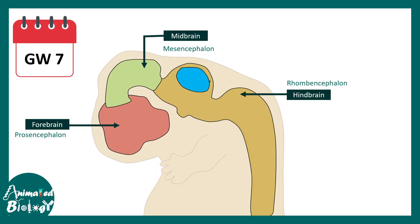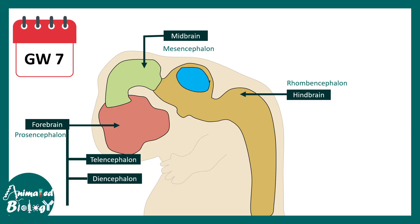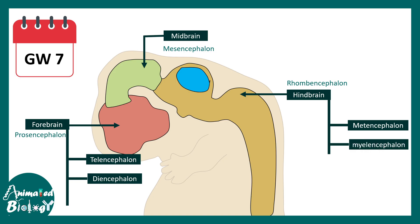At around gestational week 7, there would be further subdivision of these regions. For example, the prosencephalon gives rise to the telencephalon and diencephalon. The rhombencephalon gives rise to the metencephalon and myelencephalon. More intricate architecture is building up as time progresses.